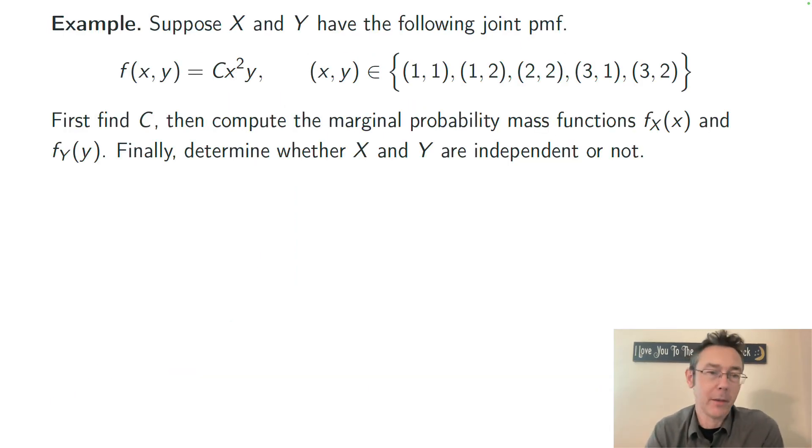One last example. Suppose we have two random variables, X and Y, with this joint probability mass function. So it's c times x squared times y, for some unknown value of c. And x and y can take only five combinations of possibilities: (1,1), (1,2), (2,2), (3,1), and (3,2).